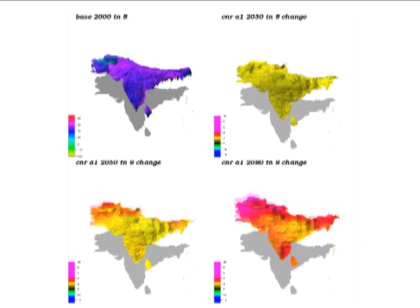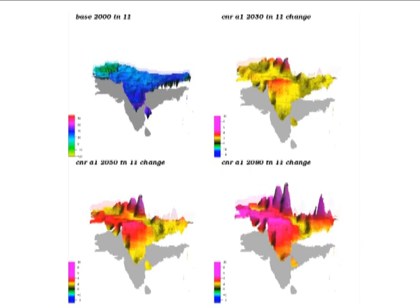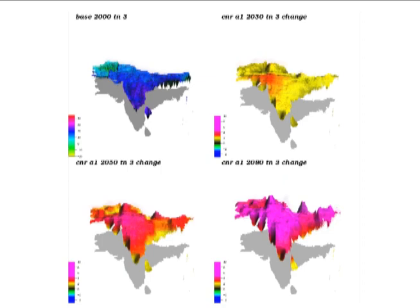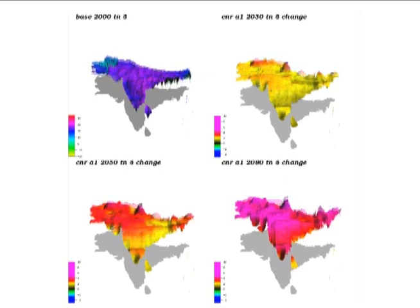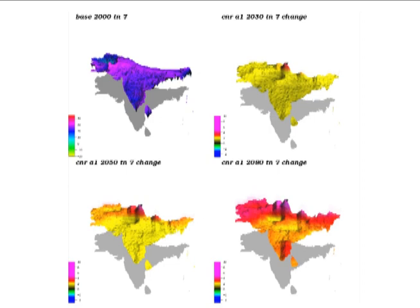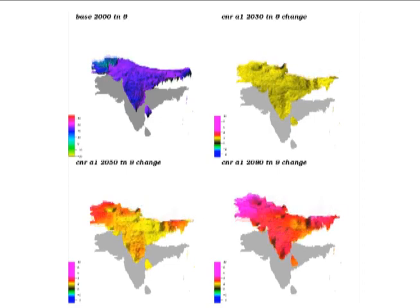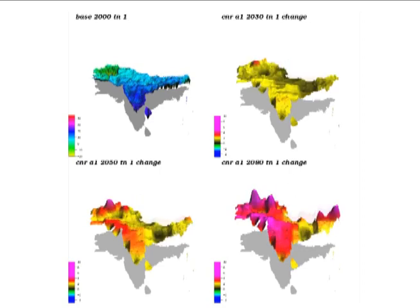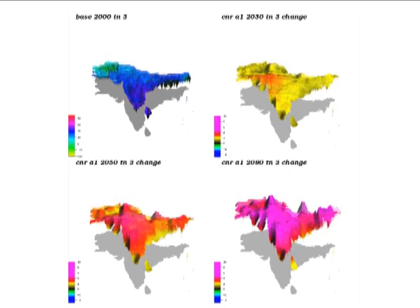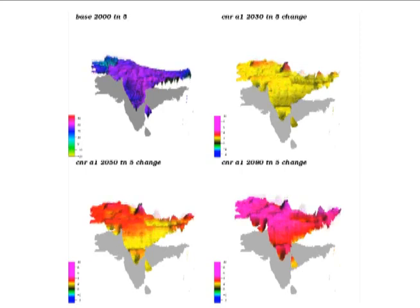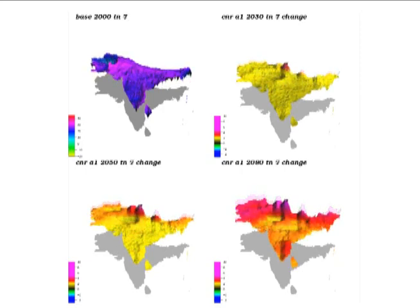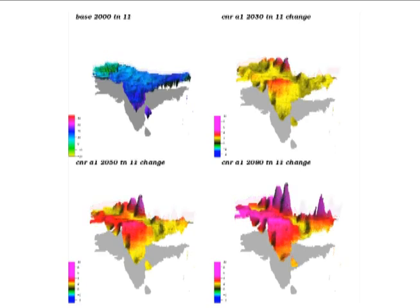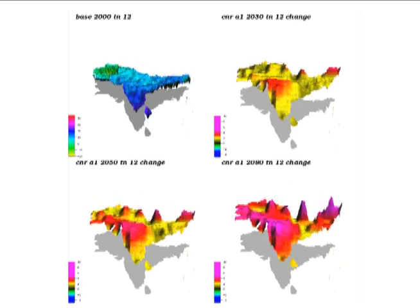The next three graphs — upper right, lower left, and lower right — convey changes in temperature from 2000. The upper right is the change from 2000 to 2030, the lower left from 2000 to 2050, and the lower right from 2000 to 2080. Note that on average, as you get further out in time, the color of the change maps shifts toward the high end of the scale — the reds and purples. But even in the 2000 to 2080 map, you can find some months in some locations where changes are relatively small.